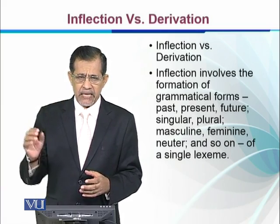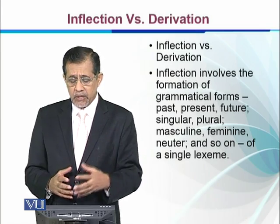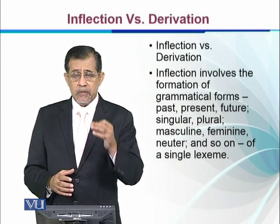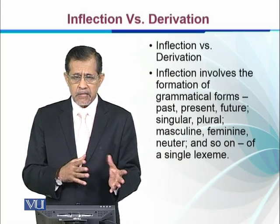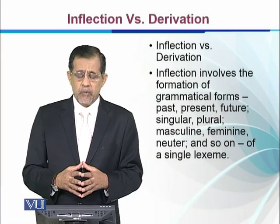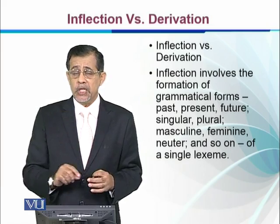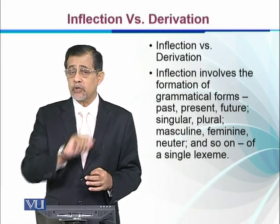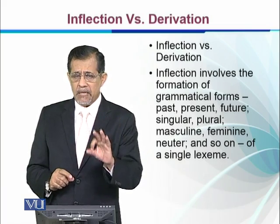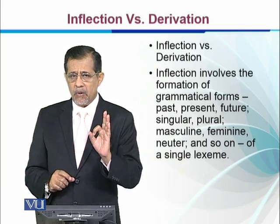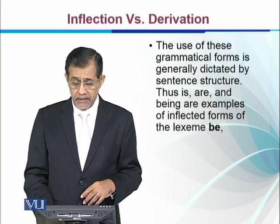For example, we have 'cat' and 'cats' — the suffix -s is added and we get a new word 'cats'. These are grammatically helpful affixes that tell us the grammar of the word. One key thing is that they do not change the grammatical category of the word — a noun remains a noun and a verb remains a verb, but that is not the case with derivation.